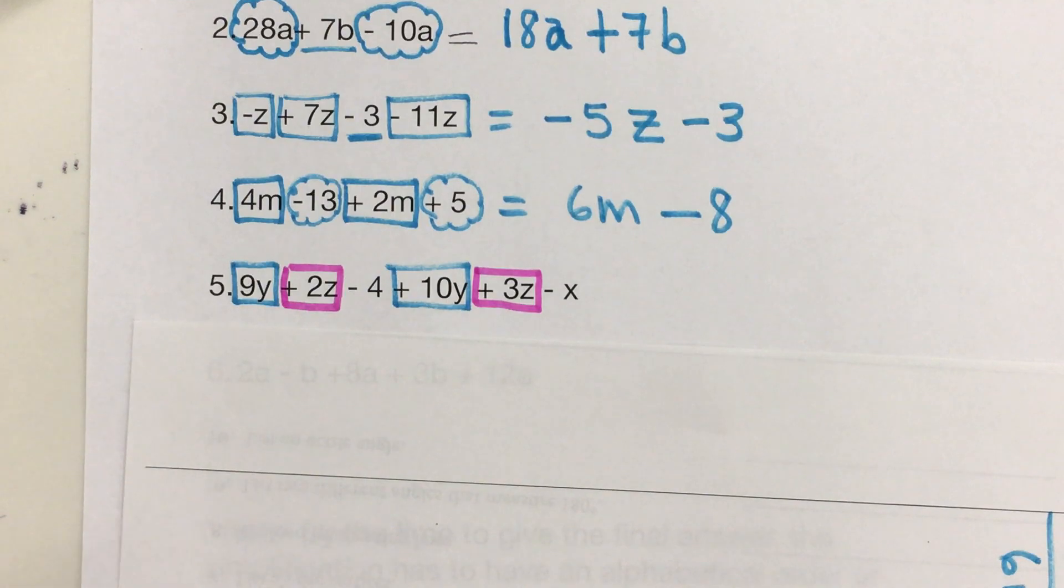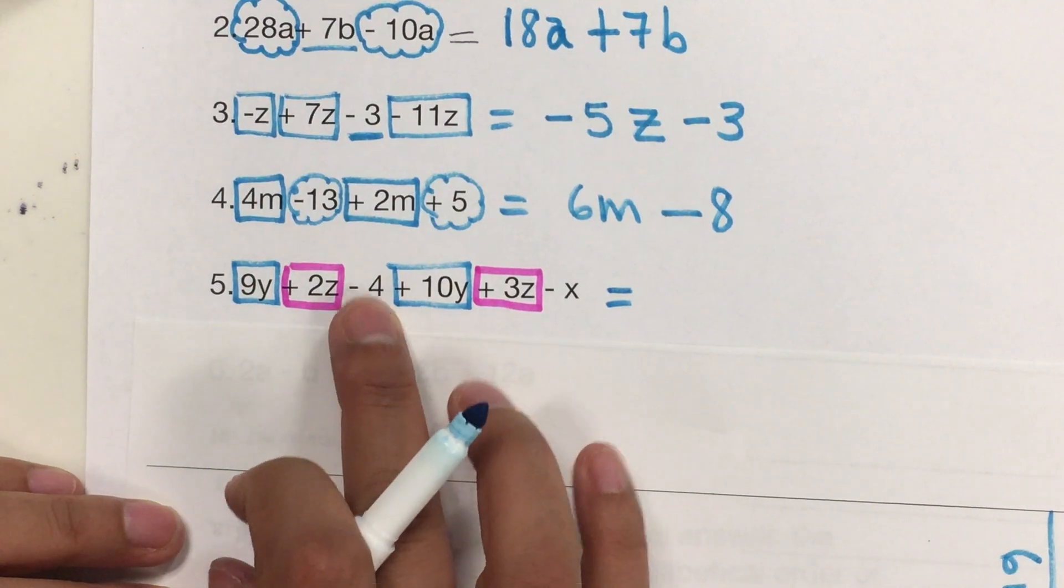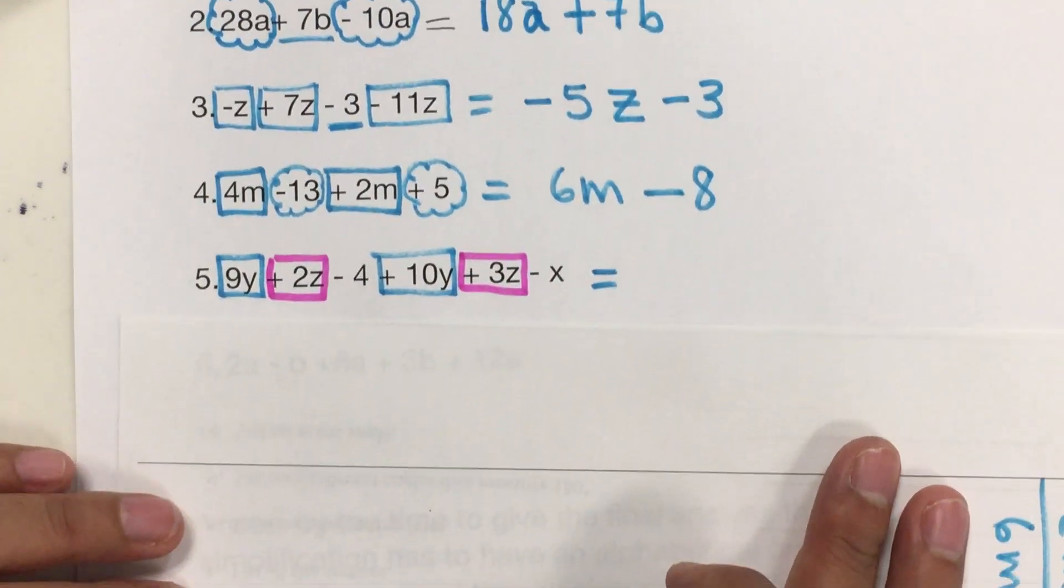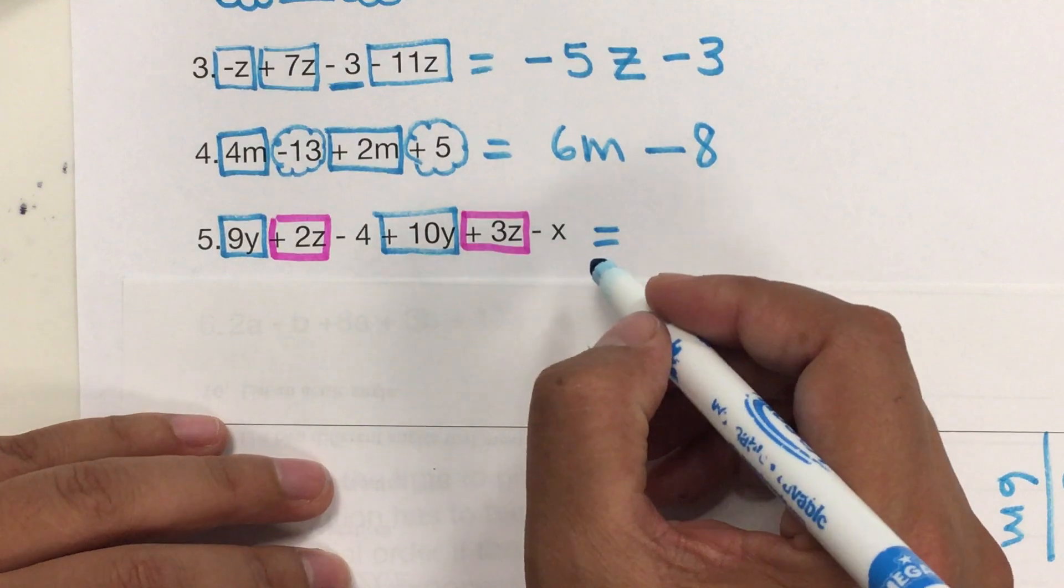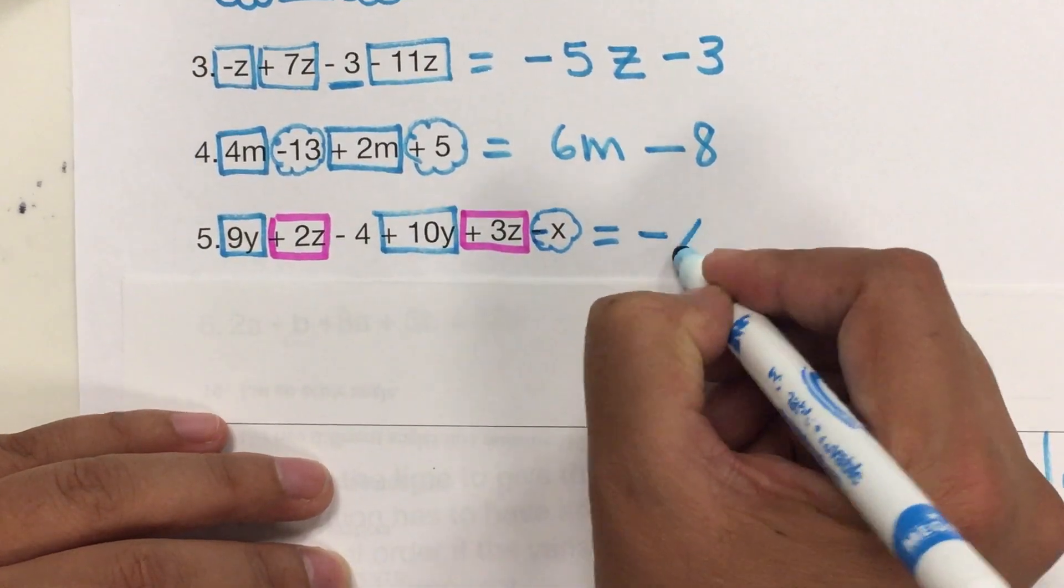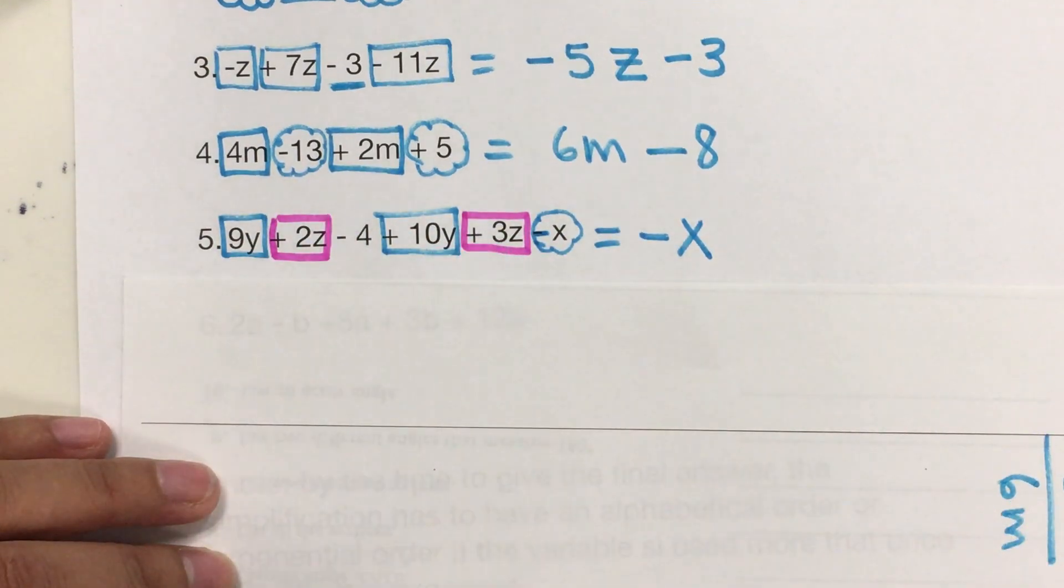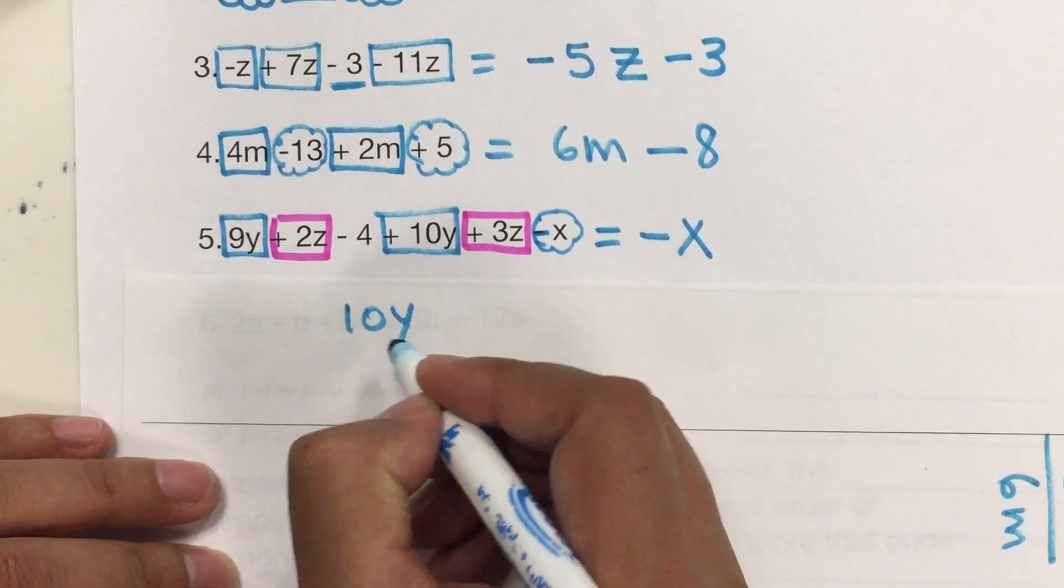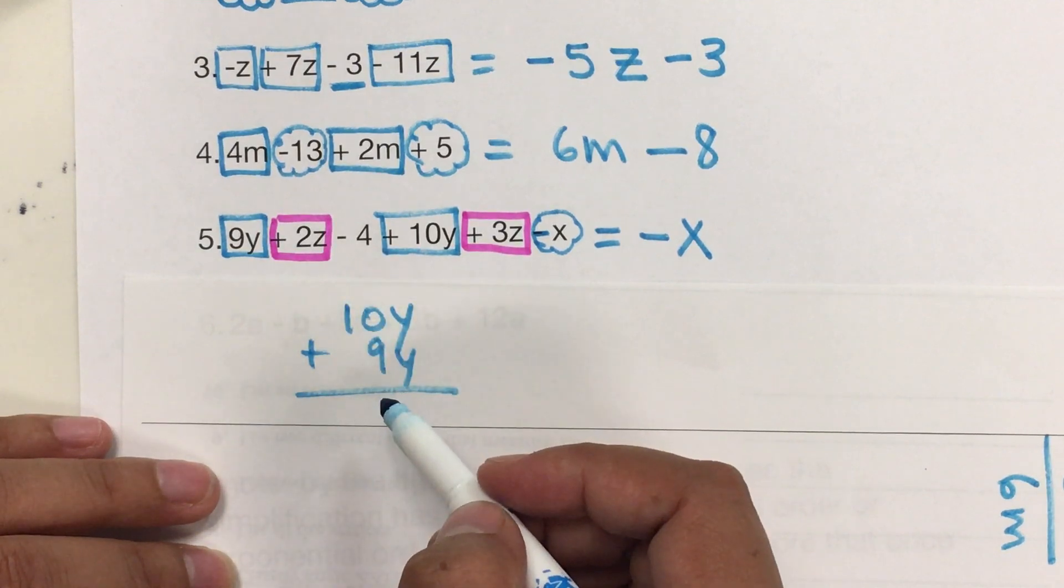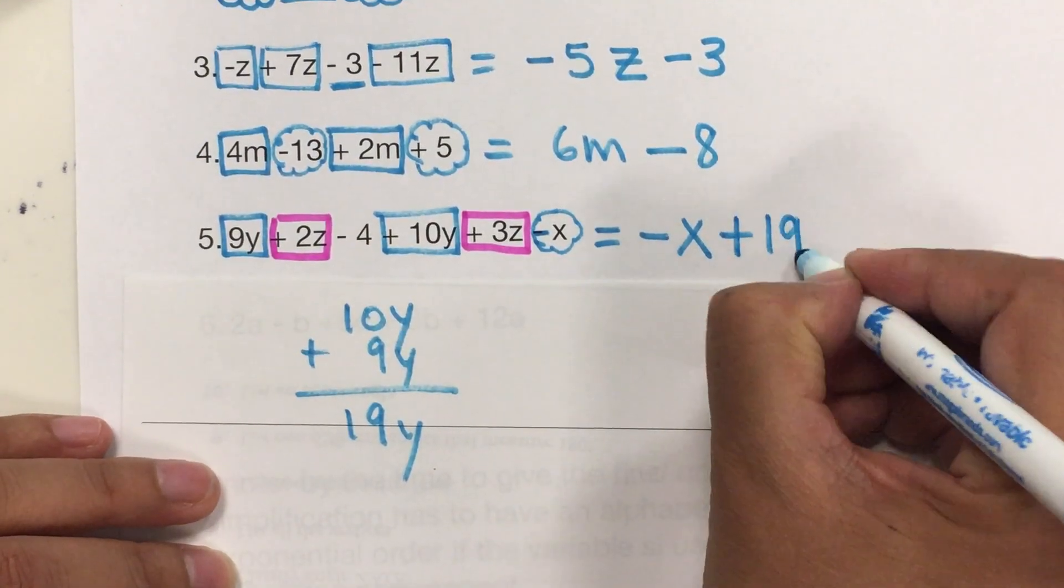One thing that we need to do is to write them also in alphabetical order. So, I have X, Y, and Z. And the constant numbers always go at the end. Notice how in here, I put it at the end. Los números solitos, sin variables, se ponen hasta el final. So, I'm going to put the X first. Remember, this is part of the variable. So, negative X. En orden alfabético. X, Y, Z. So, then comes the Y. If I have 10Y and I have 9Y, when I put them together, they are both positive. So, I add them. And so, it's 10 plus 9 is 19Y. So, I'm going to put plus 19Y.